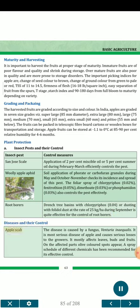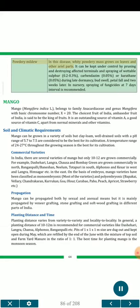Diseases and their Control. Apple Scab: The disease is caused by the fungus Venturia inaequalis. It is the most serious disease of apple and causes serious losses. It mostly affects leaves, buds and fruits; on affected parts, olive-colored spots appear. A spray schedule of different chemicals has been recommended for its effective control. Powdery Mildew: A biting powdery mass grows on leaves and other aerial parts. It can be kept under control by pruning and destroying affected terminals and spraying wettable sulfur 0.2–0.3%, carbendazim 0.05%, or karathane 0.05%, during late dormancy, bud swell, petal fall and two weeks later. In nursery, spraying of fungicides at seven-day intervals is recommended.